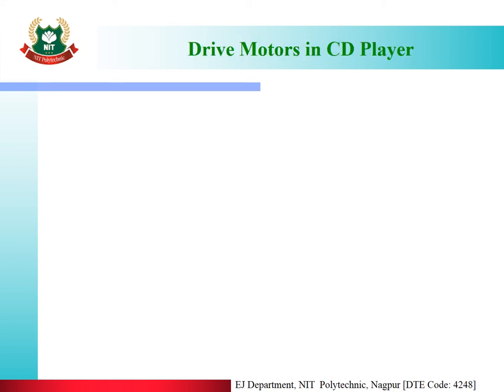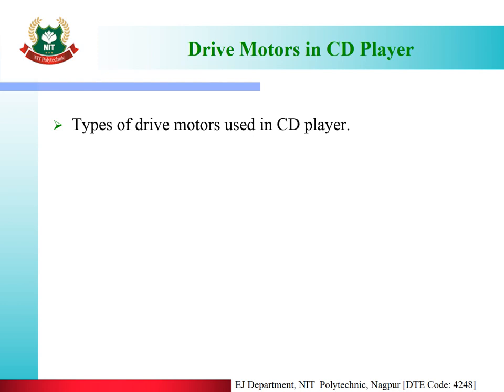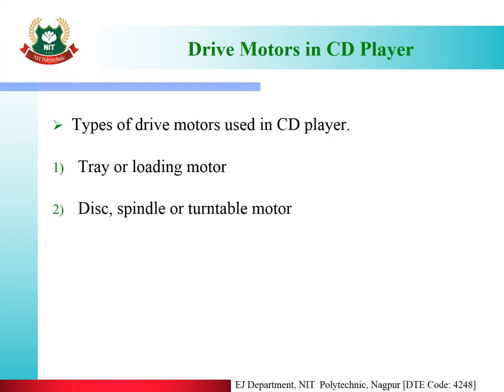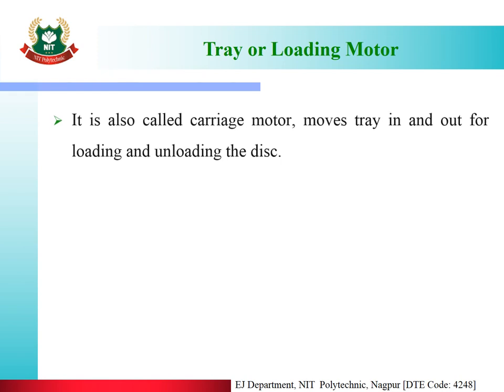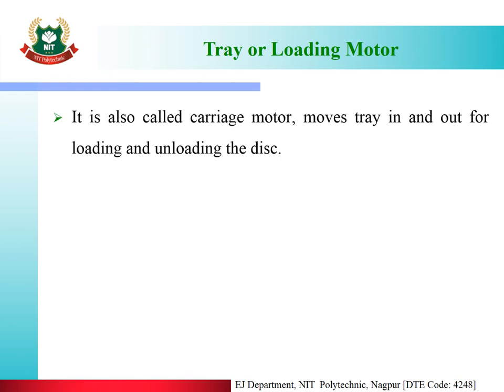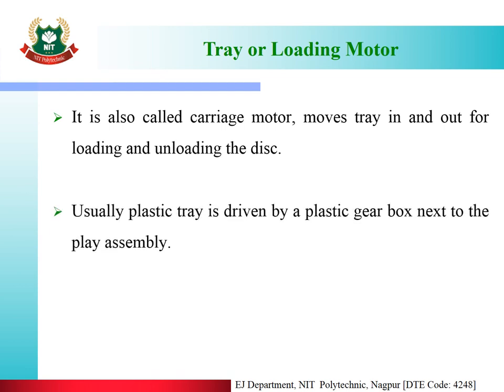The types of drive motors used in a CD player are: tray or loading motor, disk spindle or turntable motor, and slide/sled/feed motor. The tray or loading motor, also called the carriage motor, moves the tray in and out for loading and unloading the disk. Usually a plastic tray is driven by a plastic gearbox.